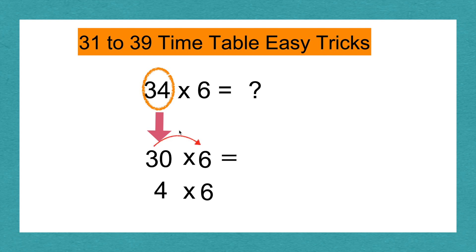3 times 6 equals 18. And then I'm going to add the 0. 30 times 6 equals 180. 4 times 6 equals 24.